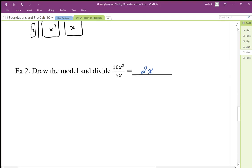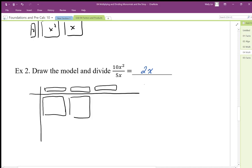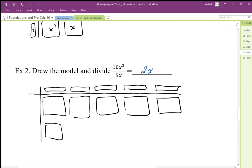We know that we have 5x along one edge, so we're going to have 5x along one edge, and I need to be able to fit the 10x² in groups of 5.